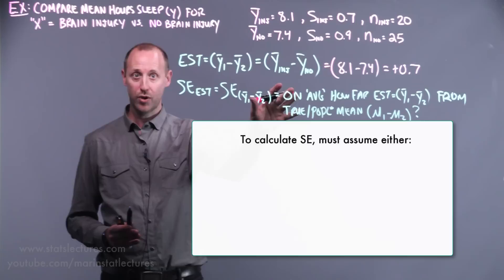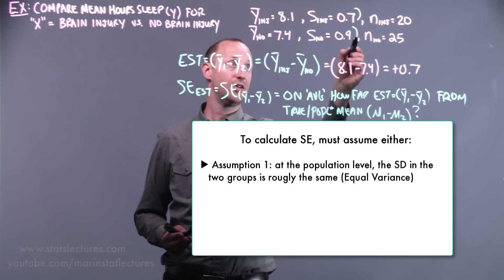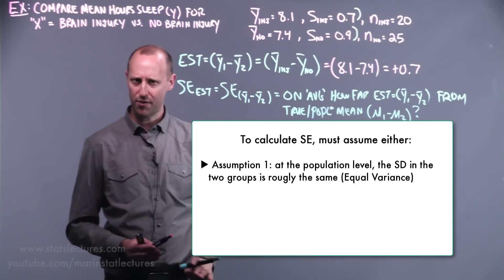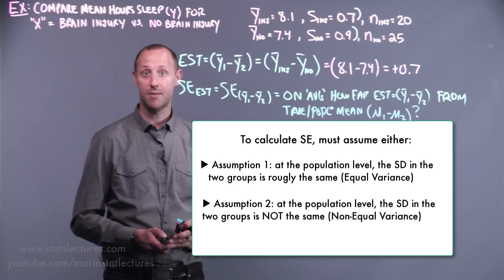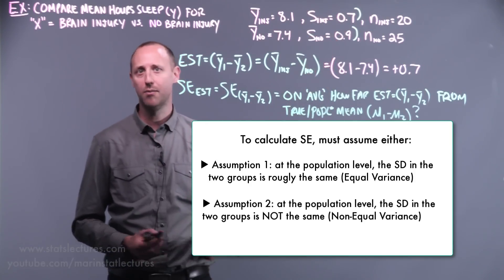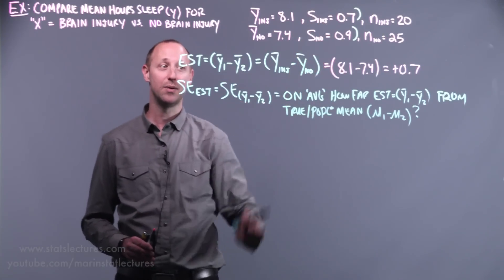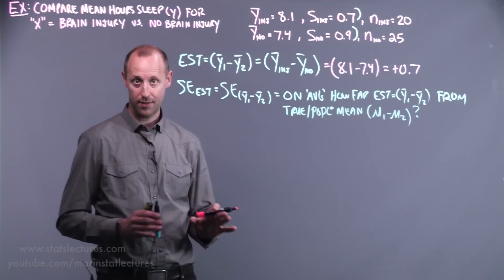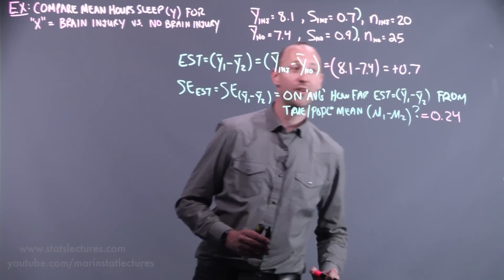In order to calculate the standard error, we need to make one of two assumptions. We either need to assume at the population level, the standard deviation in the two groups is roughly the same, or we assume that these are not equal, that one group is more variable than the other. We'll talk more about this assumption in a separate video. Again, conceptually it's important. Numerically, it's not important to focus your attention on how to calculate the standard error depending on which assumption you make. As we progress through this video, we're going to work with the assumption that they're not equal, that one group might be a little bit more variable than the other. If we were to work out the standard error under that assumption, we'd find it comes out to be about 0.24.